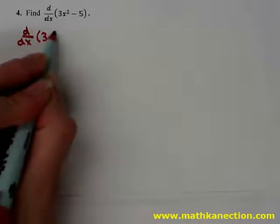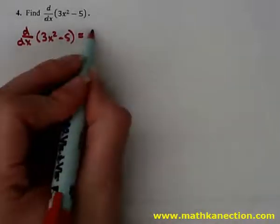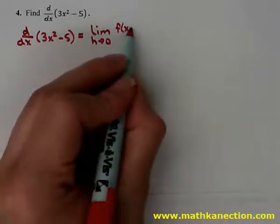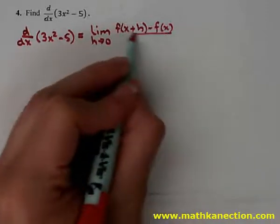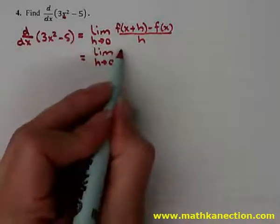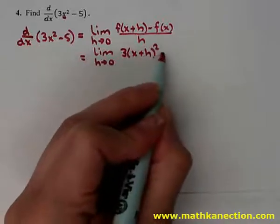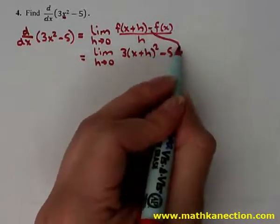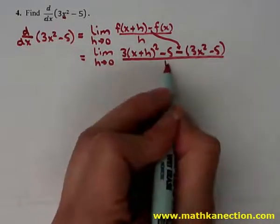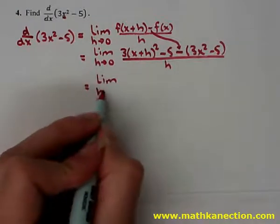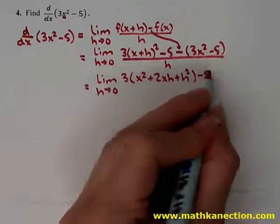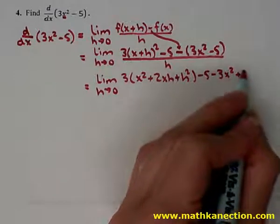Our first example uses d/dx notation, which is just notation to find the derivative. So d/dx of 3x squared minus 5 means we do the limit as h approaches 0 of f of x plus h minus f of x, all over h. Placing x plus h into the function gives 3 times the quantity x plus h squared minus 5, minus the original function 3x squared minus 5, all over h.